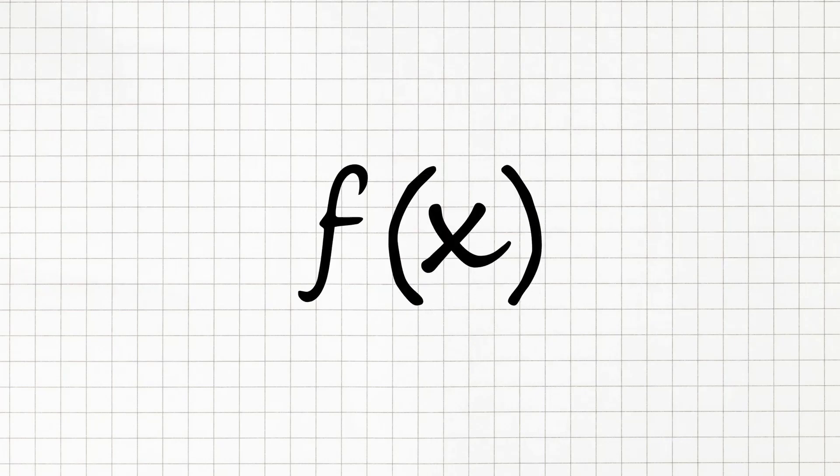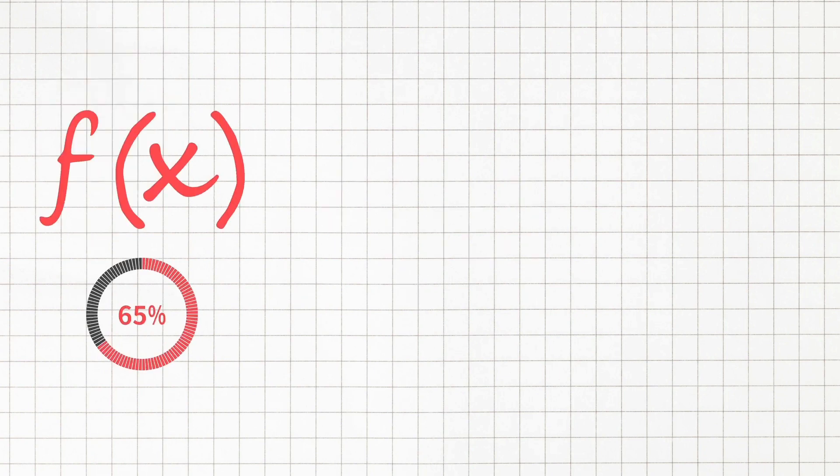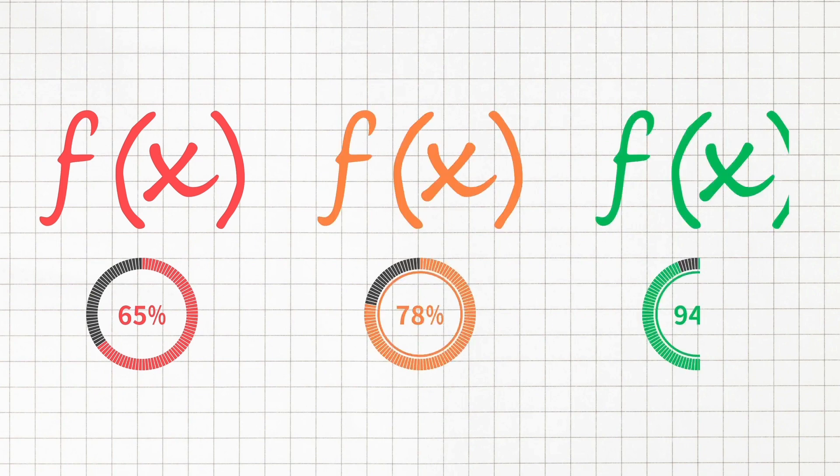Big O notation is the language we use for talking about how long an algorithm takes to run. We can compare different functions or algorithms using Big O and say which one is better than the other when it comes to scale, regardless of our computer differences.